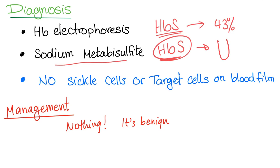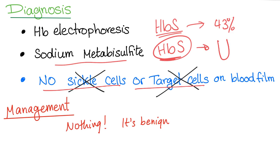Pay close attention here: there are no sickle cells in sickle cell trait, and there are no target cells in sickle cell trait. Sickle cells and target cells are only found in sickle cell anemia — hemoglobin SS — not in hemoglobin AS. Management? Nothing. It's a very benign condition and needs no treatment. That's it for sickle cell trait — pretty straightforward.